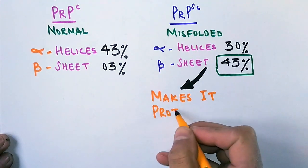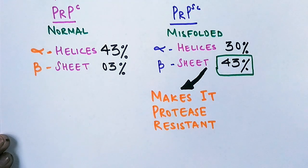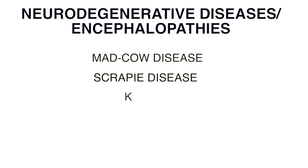These prions can cause neurodegenerative diseases. It causes several spongiform encephalopathies like mad cow disease, scrapie disease, Kuru, and others.